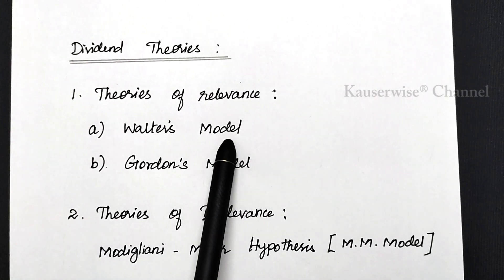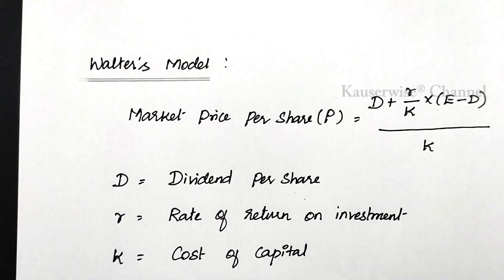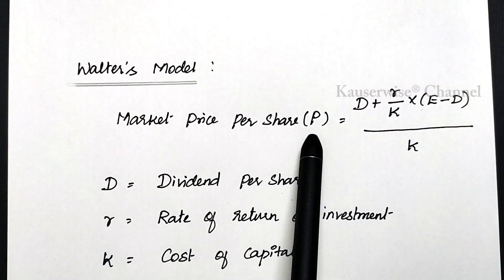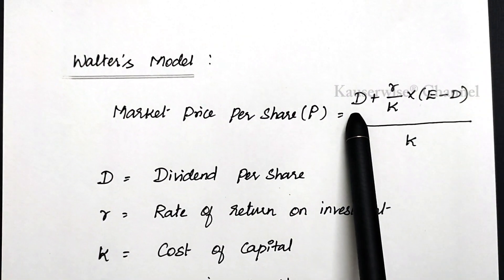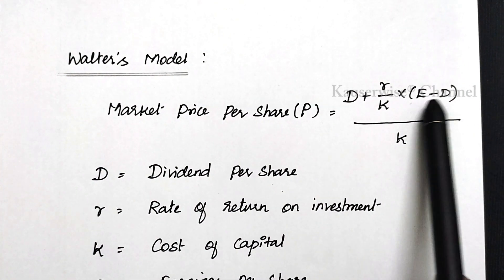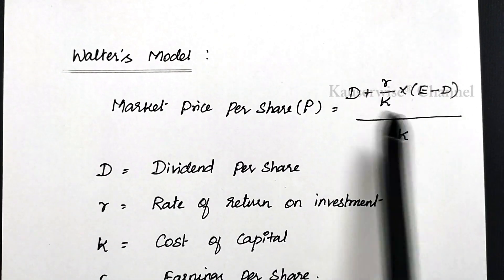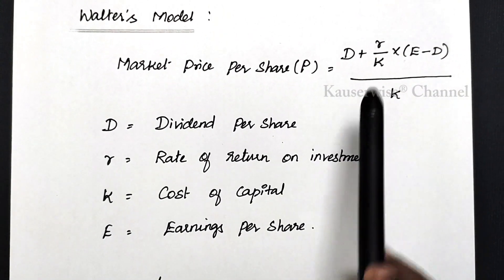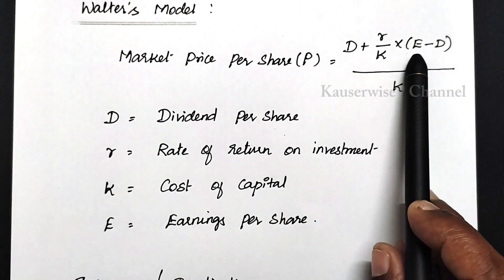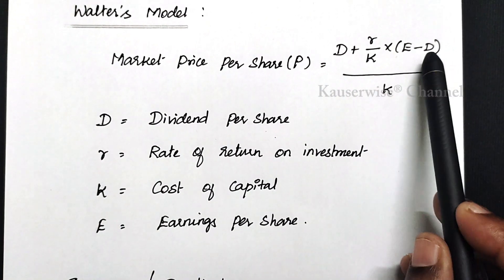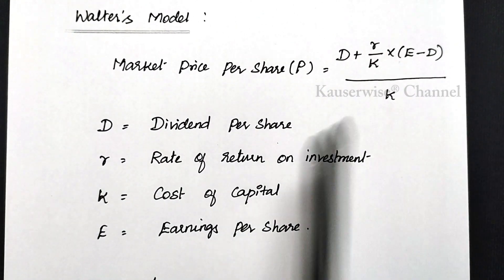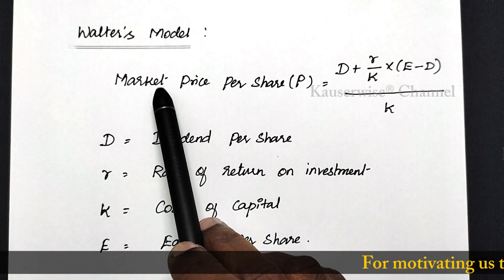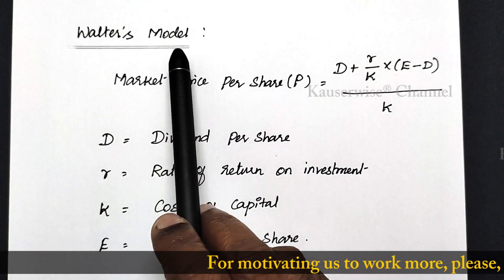First let us see Walter's model, which comes under theories of relevance. Under Walter's model we have one formula to find out the market price per share. The formula is: D plus (R/K) into (E minus D), divided by K. Here D refers to dividend per share, R refers to rate of return on investment, K refers to cost of capital, and E refers to earnings per share.